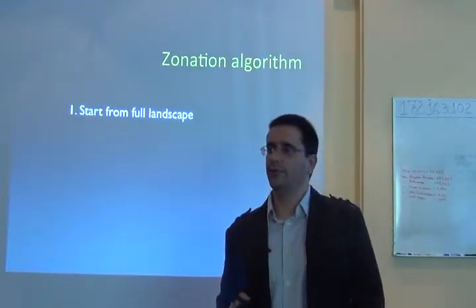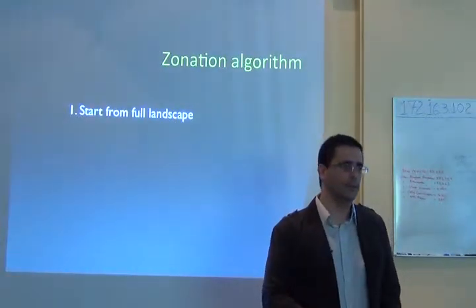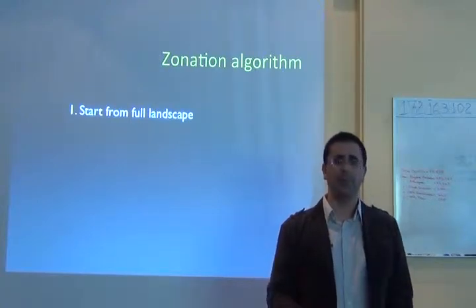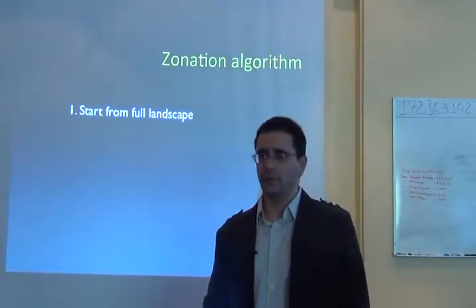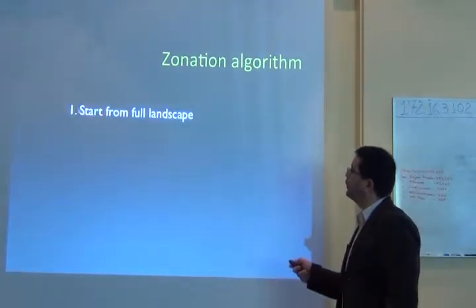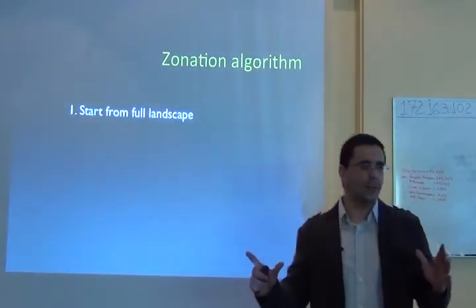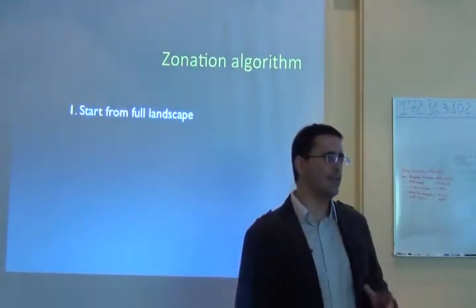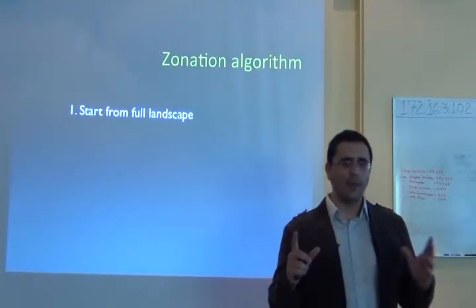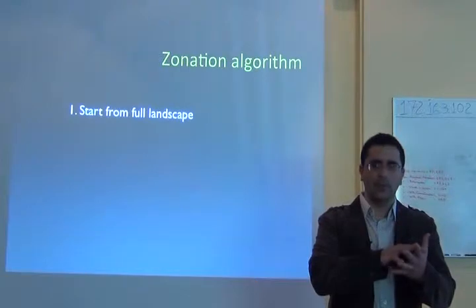How does a nation select priority areas? The algorithm is pretty simple and straightforward. You start from the full landscape — that region you're planning — and you have a grid cell superimposed to it.